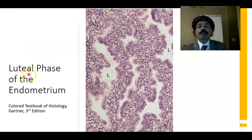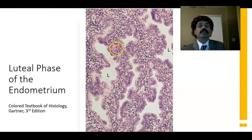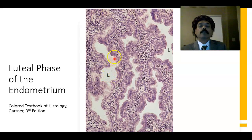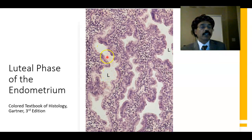In the luteal phase of the endometrium, looking at the glands — the glands are filled with fluid and surrounded by abundant stroma. The stroma is rich in blood and nutrients. The luteal glands are coiled and contain fluid that is rich in glycogen.